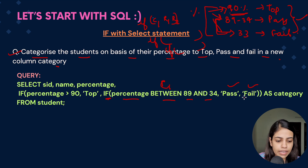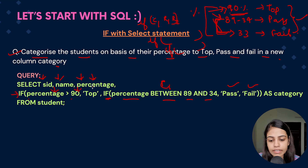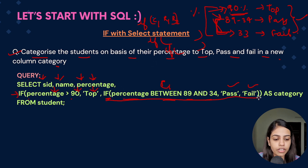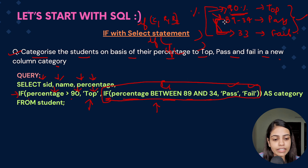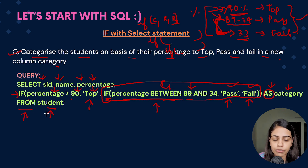The full query is: SELECT s_id, name, percentage, IF(percentage > 90, 'Top', IF(percentage BETWEEN 34 AND 89, 'Pass', 'Fail')) AS category FROM student. When percentage is greater than 90 it returns 'Top'; if not, the inner IF checks whether it falls between 34 and 89 for 'Pass', otherwise 'Fail'. The AS keyword gives it the alias 'category' as a new column.